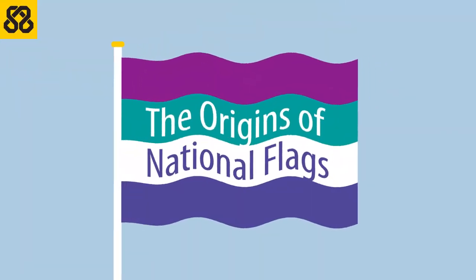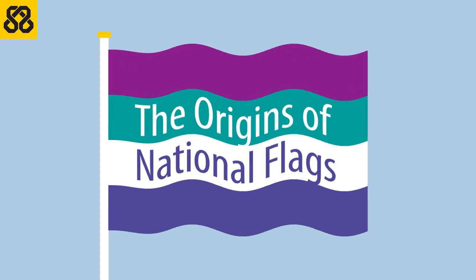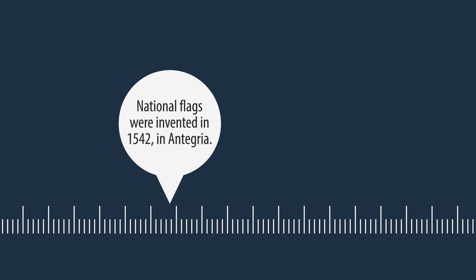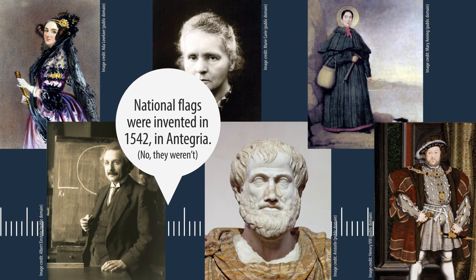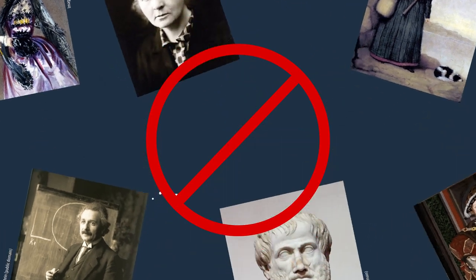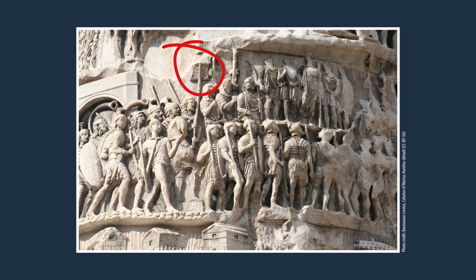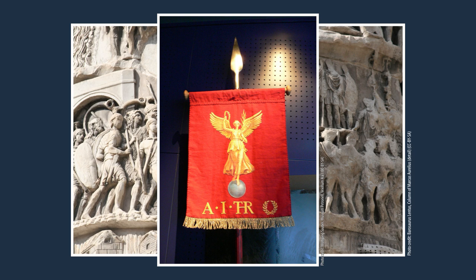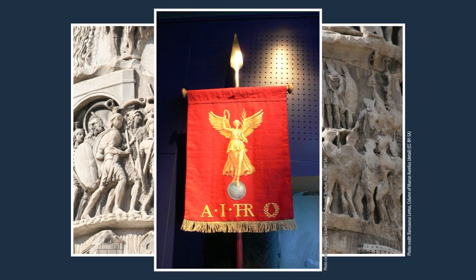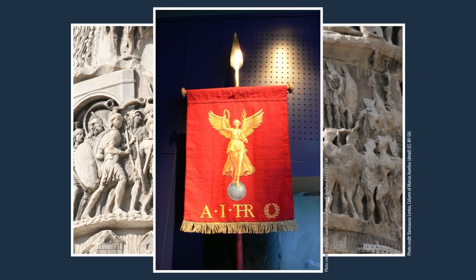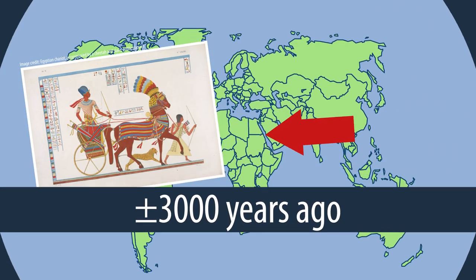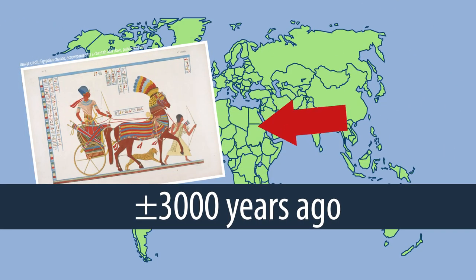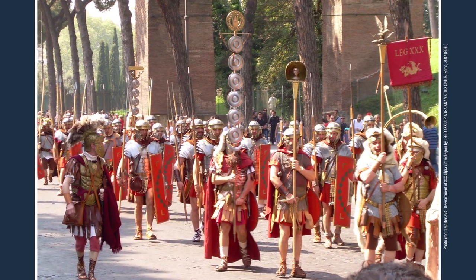Let's look at the origins of national flags. National flags do not have a fixed point in time when someone now famous invented them. They came about evolving from earlier ideas. It's most likely that flags as we know them developed from the military standard. Standards probably originated in ancient Egypt about 3,000 years ago and were used by the Roman Empire as part of their large armies.